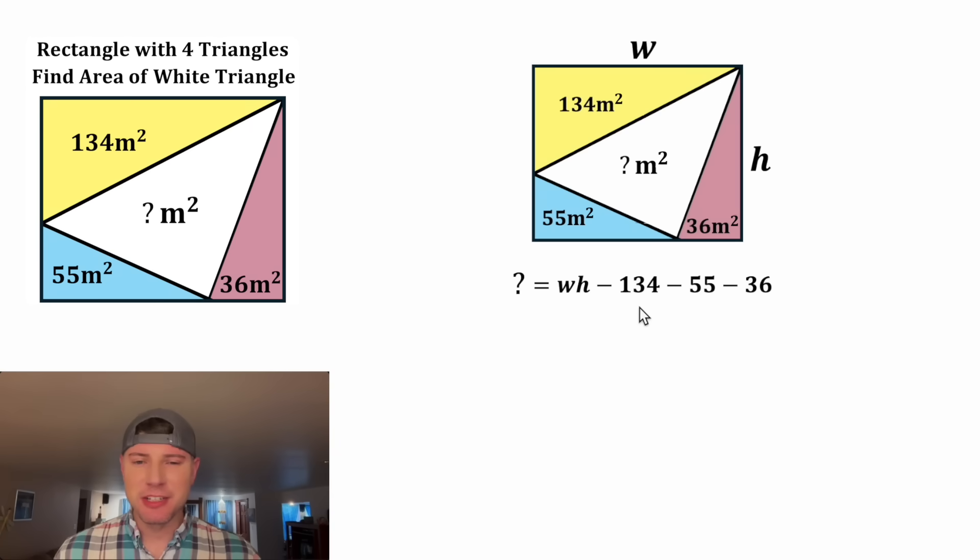And then we can combine like terms: negative 134 minus 55 minus 36 is the same thing as negative 225. And this is the formula we can use to find the area of the white triangle. Let's put a box around it and move it down here.